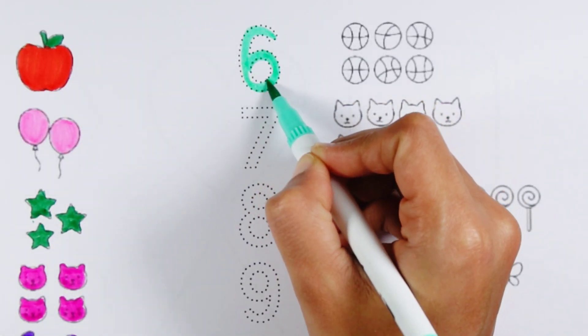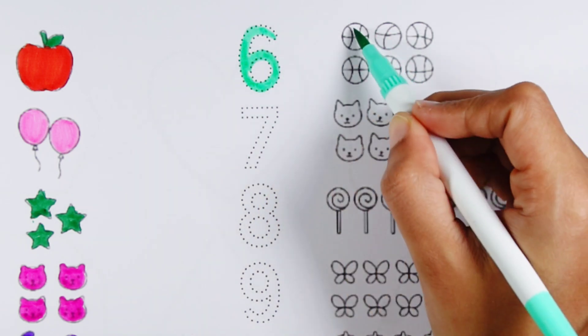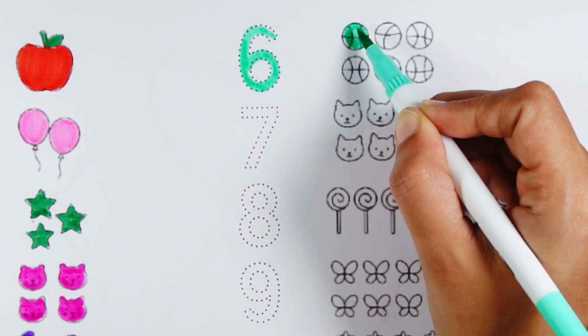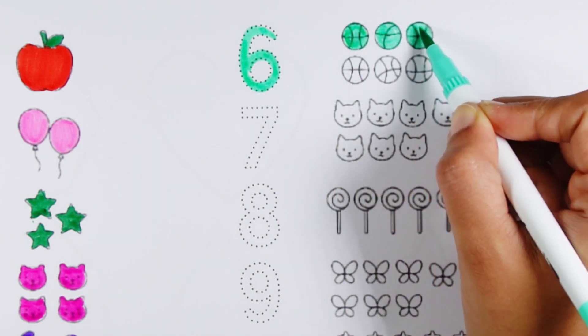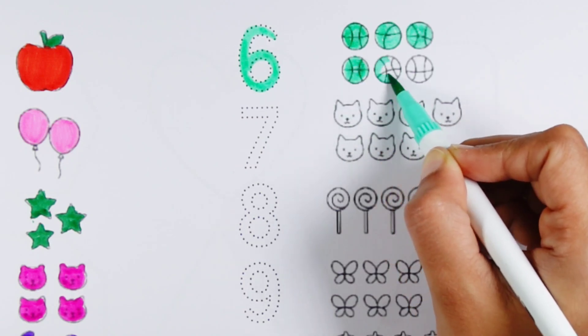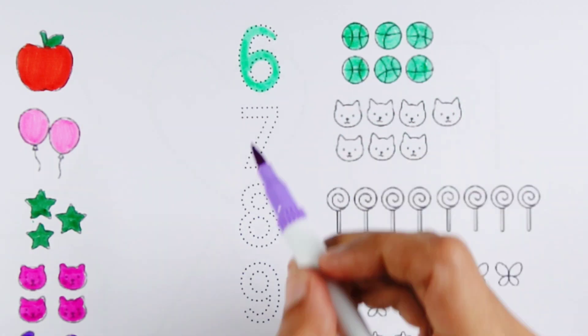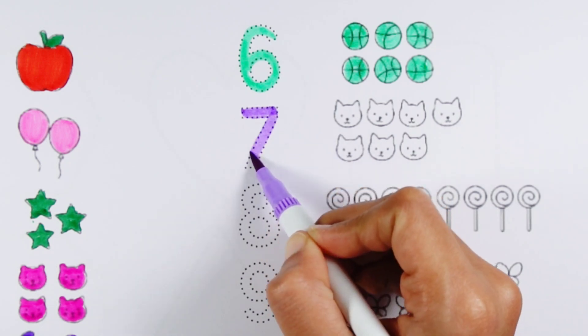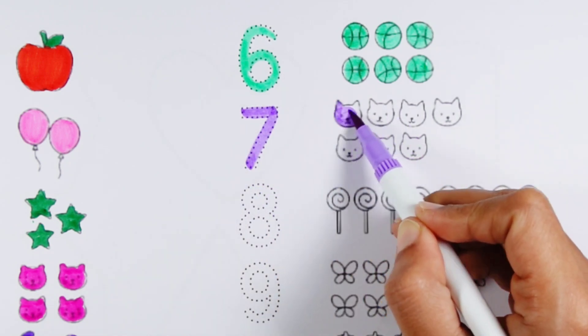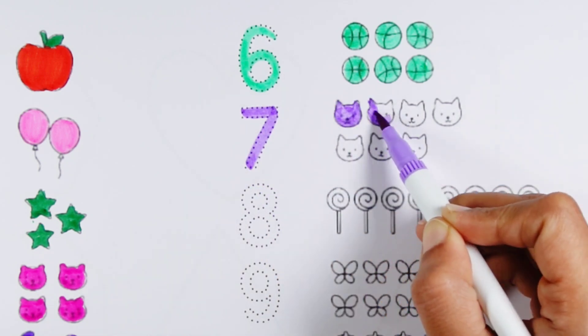Number six. One, two, three, four, five, six. Six bolts. Number seven. One, two, three.